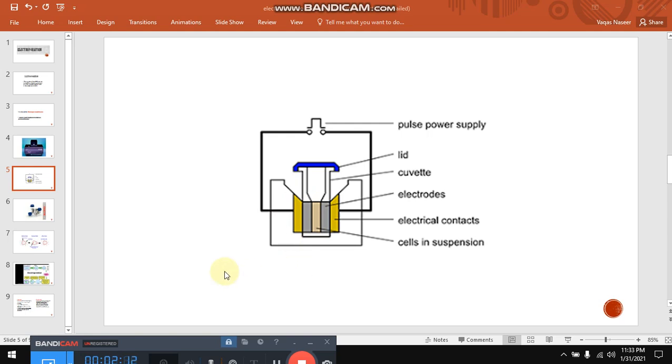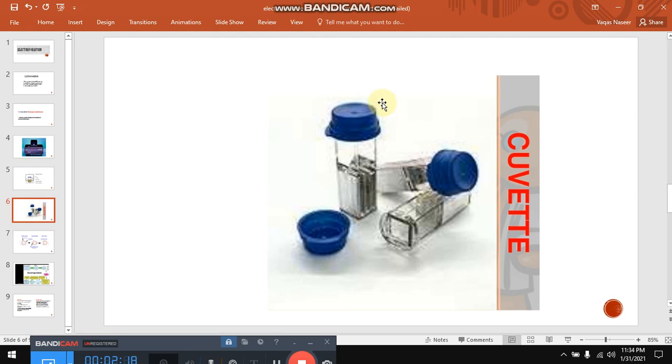Friends, what actually we do, we insert that cuvette into the electroporator appliance, then the voltage and the capacitance are set. After electroporation, nearly one milliliter of liquid enters into the bacteria. And then we incubate that tube at optimum temperature, nearly for an hour. What is the purpose? The purpose is for the recovery of cells.